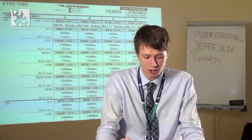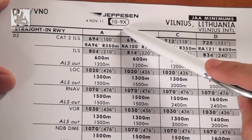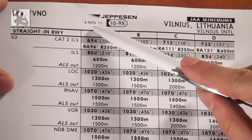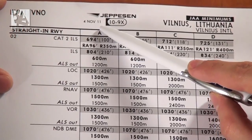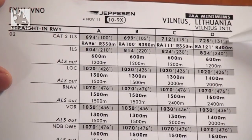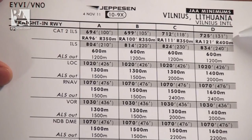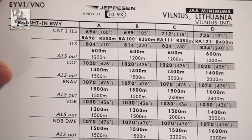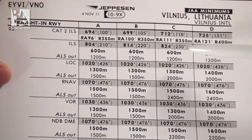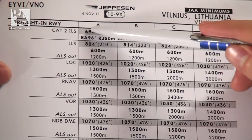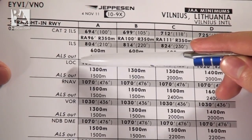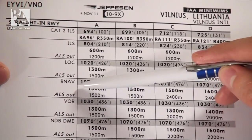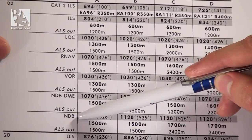Now moving to the next chart, which is 10.9 X-ray — the GAA minimums, published 2011 November 4th. I won't talk too much about this chart because basically all it does is list all the minimums for approaches into runway 02 or 20. Examples of approaches are: category 2 ILS, ILS with approach lighting system out, localizer — also with approach lighting system out if needed — RNAV approach, VOR approach, NDB DME approach, and NDB approach.